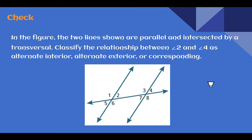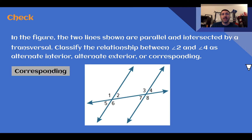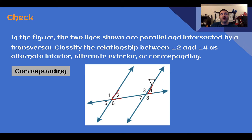Check your understanding — classify the given angles as alternate interior, alternate exterior, or corresponding. The answer: these are corresponding angles. Here's angle two and here's angle four. They are in the same position relative to the parallel lines and the transversal, so that makes them corresponding. They are not both inside, so they can't be alternate interior; they are not both outside, so they can't be alternate exterior.